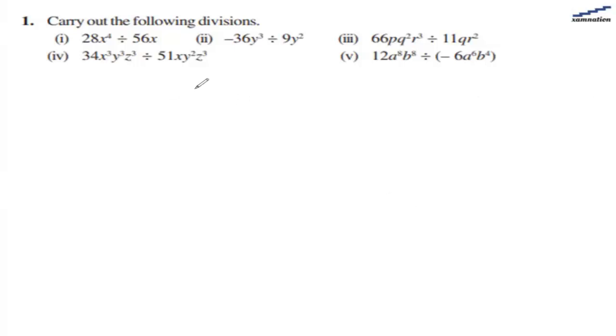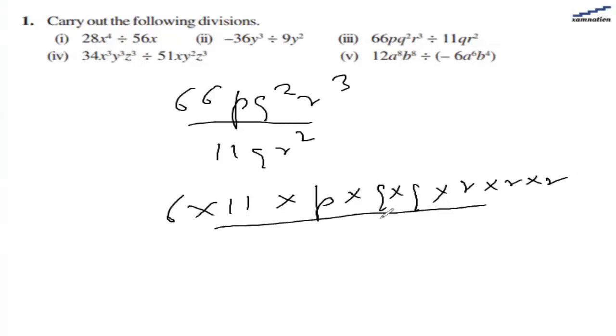In the third part we have 66pq squared r cubed divided by 11qr squared. In the numerator we have 6 times 11 times p, then q and q and r coming 3 times. In the denominator we have 11q and r coming 2 times. After cancellation, we are left with 6pqr, so 6pqr is the answer for the third part.